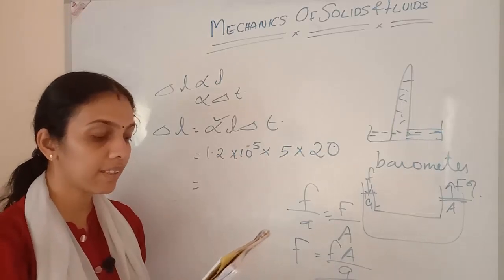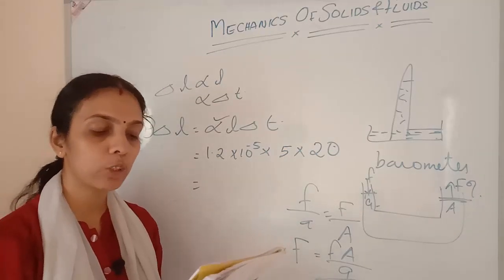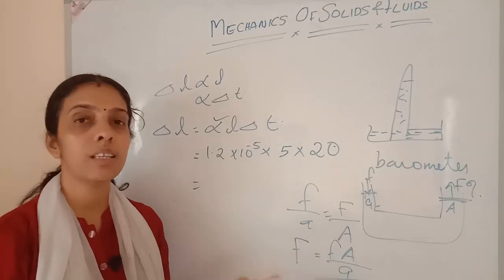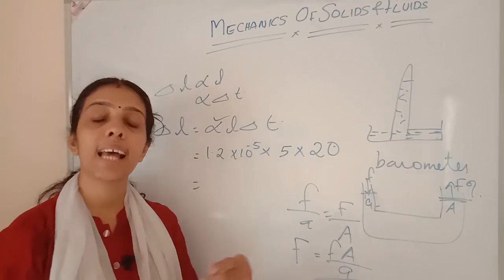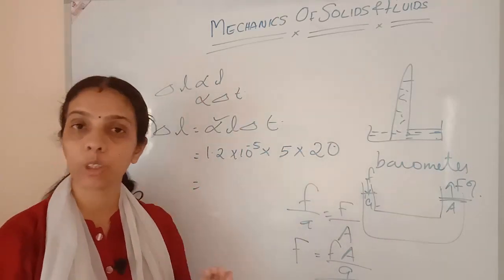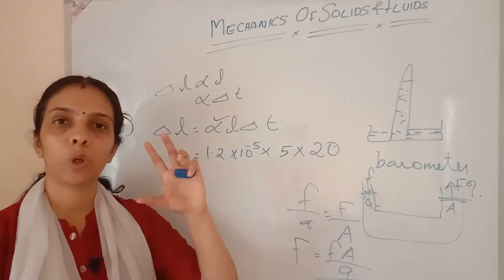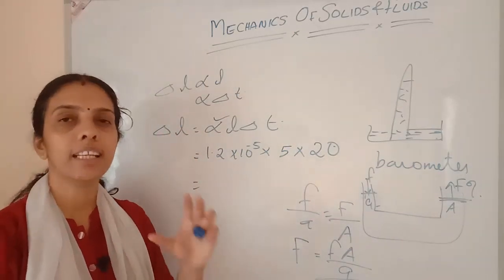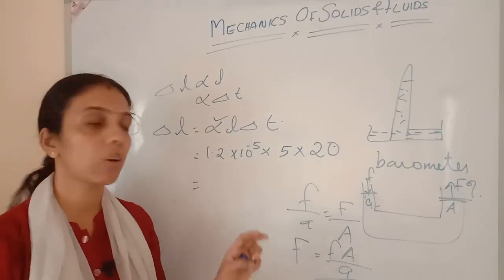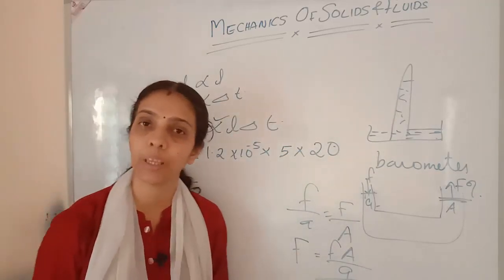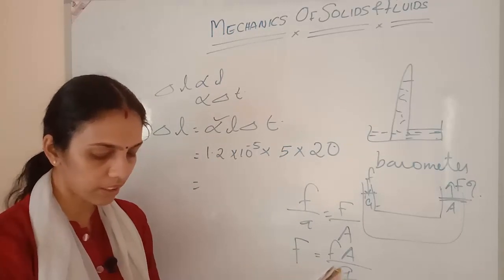If the barometer arrangement is placed in an elevator accelerating upwards, what happens to the possible height of the liquid column in the tube? G exists as it is moving upwards. While moving upwards in the elevator, no change will happen in the pressure, because pressure depends on the difference in air pressure. The pressure difference won't change — no change in pressure.